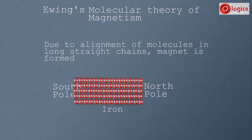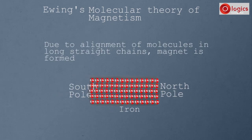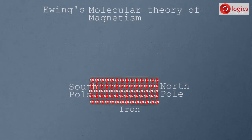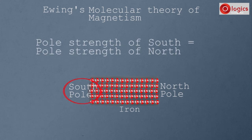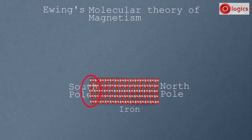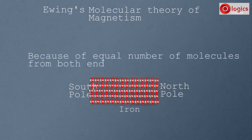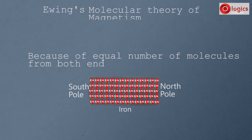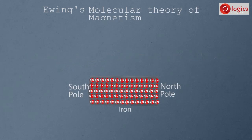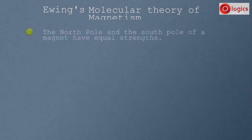Due to alignment of molecules in long straight chains, a magnet is formed. Now, the pole strength on one end equals the pole strength on the other end. If five molecules with south poles are at one end, then five molecules with north poles are at the other end. Because of the equal number of molecules on both ends, pole strength is equal. This theory explained why the north pole and south pole of a magnet have equal strengths.